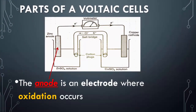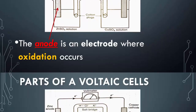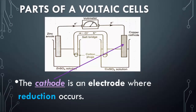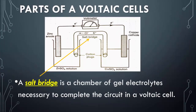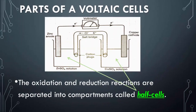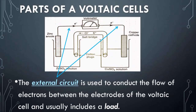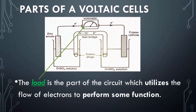There are several key parts of every voltaic cell. The anode is the electrode where oxidation occurs. The cathode is the electrode where reduction occurs. A salt bridge contains gel electrolytes and allows the circuit to continue. Half cells are where oxidation and reduction happen separately in their own compartments. The external circuit conducts the flow of electrons between electrodes. It includes a load — the part of the circuit that utilizes electron flow to perform a function. In this picture it's a voltmeter, but it could also be something like a light bulb.